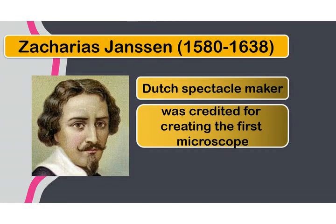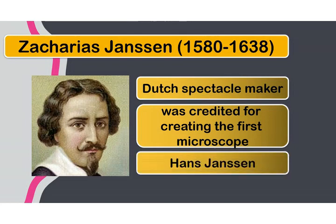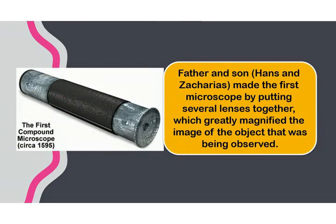Zacharias Janssen, from 1580 to 1638, a Dutch spectacle maker, was credited with creating the very first microscope. It was believed that he had help from his father Hans Janssen, because the microscope was created during the 1590s when Zacharias was still young. Father and son made the device by putting several lenses together, which greatly magnified the image of the object being observed.